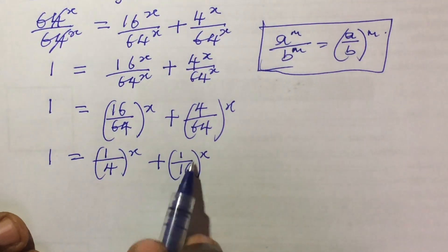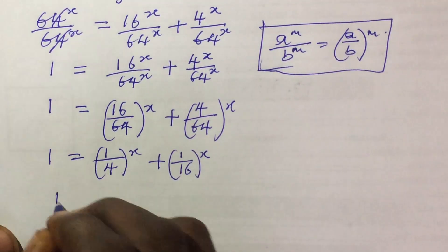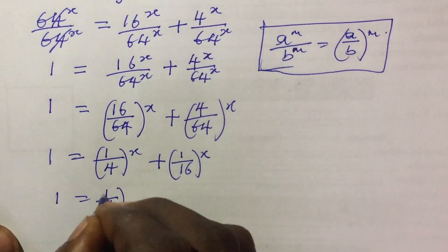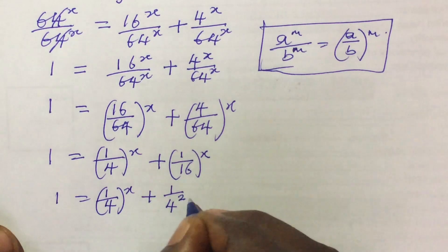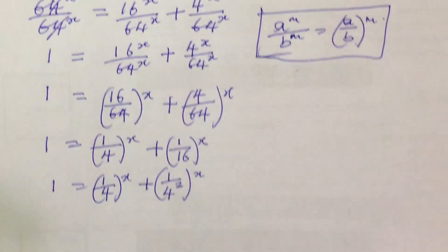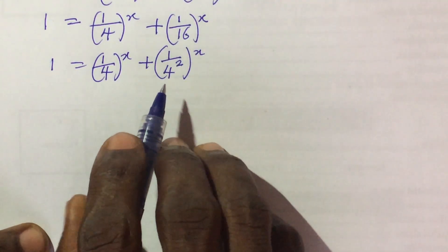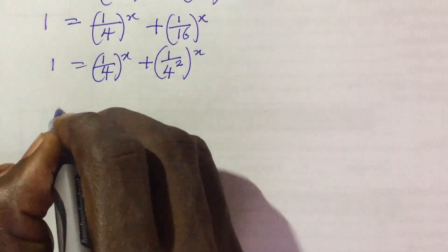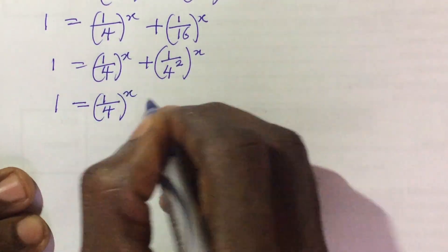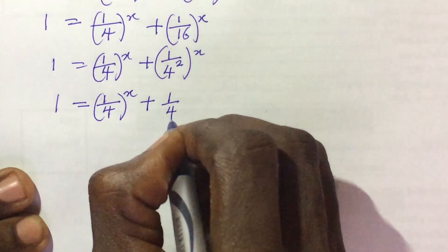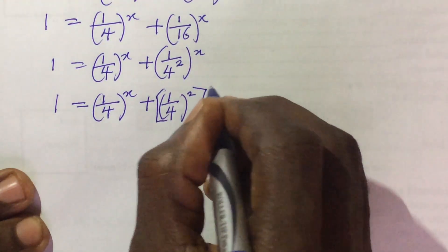Now we can express 16 as 4 to the power of 2 because we want to make the bases the same. So this will now give us 1 equal to 1 all over 4, all to the power of x, plus 1 all over 4 to the power of 2, all to the power of x. We can express the whole of this to the power of 2 because 1 to the power of 2 still gives us 1.